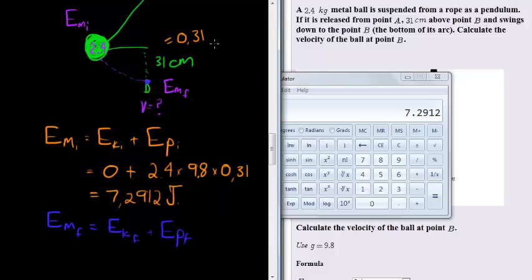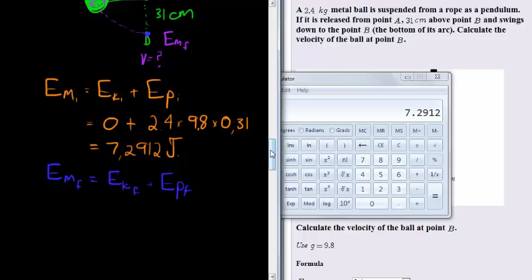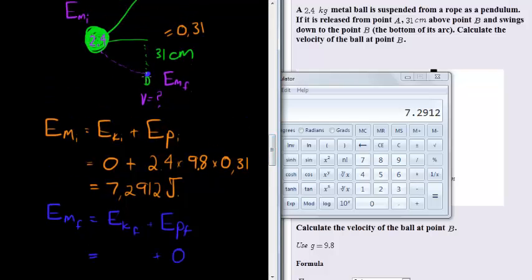Now the final potential energy this time is zero because it's got nowhere left to fall. It's now going back up again, so it's increasing its potential energy. But at the bottom point it is zero.